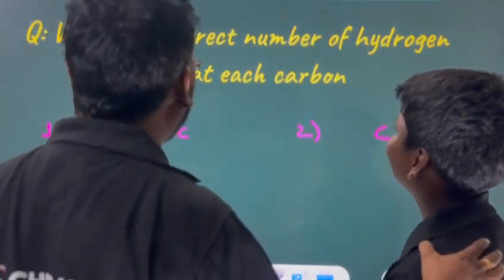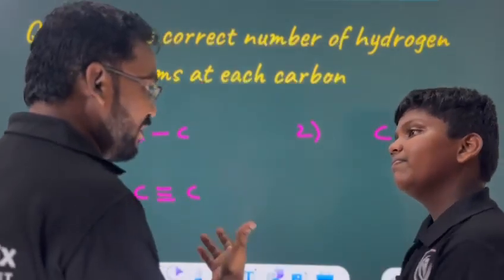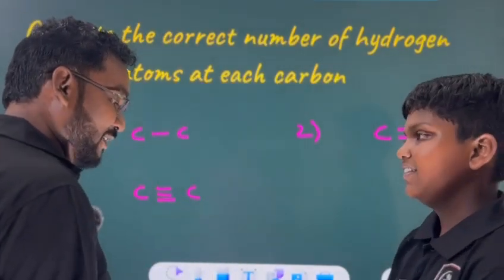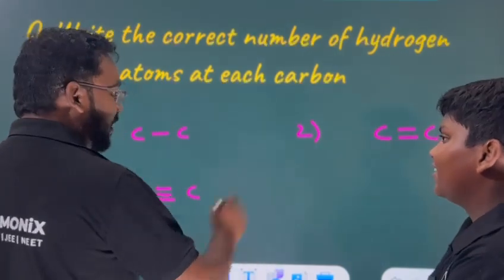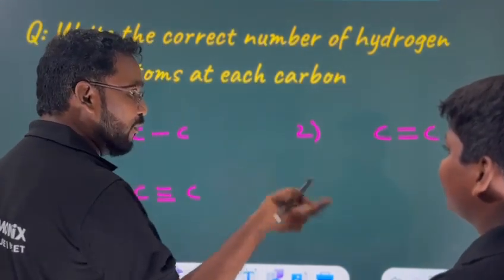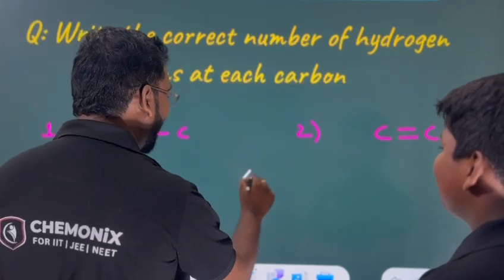Write the correct number of hydrogen atoms at each carbon. This question, right? Yes sir. Give me your pen. Yes sir. I will tell you simple technical. So, you are seeing. Just answer to my question, you will find the trick, 4 minus.